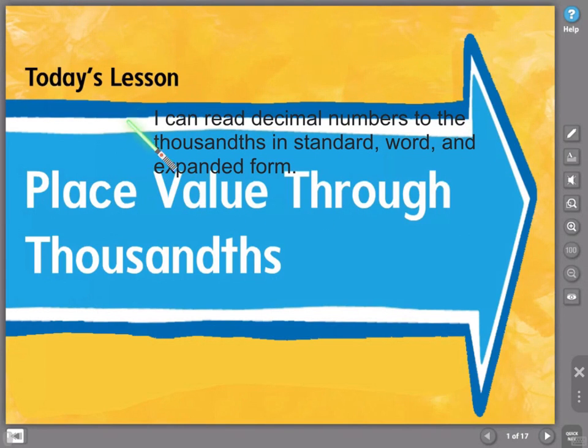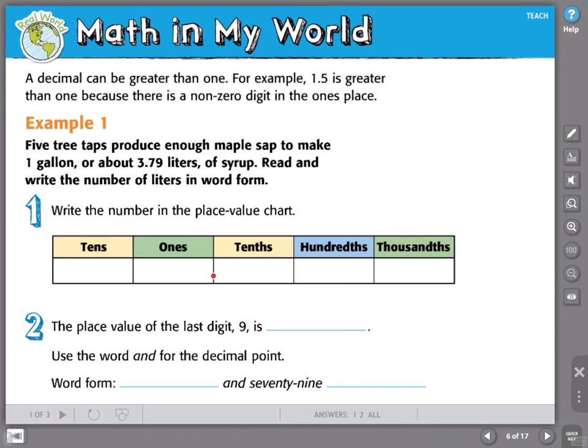Let's take a look at our notes for the day. Before we start our first example, I want to point out that a decimal can be greater than one. For example, 1.5 is greater than one because there is a non-zero digit in the ones place.